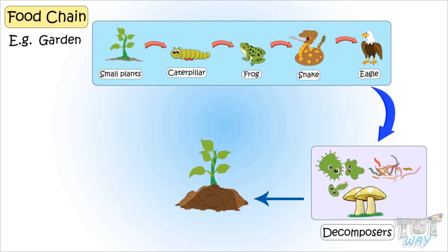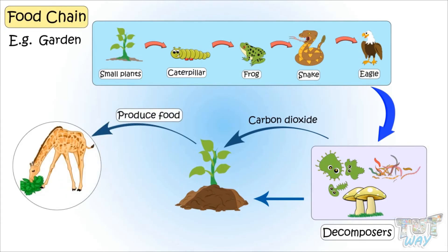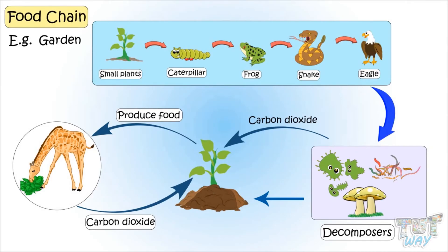Microorganisms, while decomposing the animal waste, also release carbon dioxide into the air, which is also used by plants to breathe. Thus, plants produce food for animals, and animals give carbon dioxide for plants while breathing. And animals are also reduced to nutrients and carbon for plants when they are dead. So plants and animals are dependent upon each other.